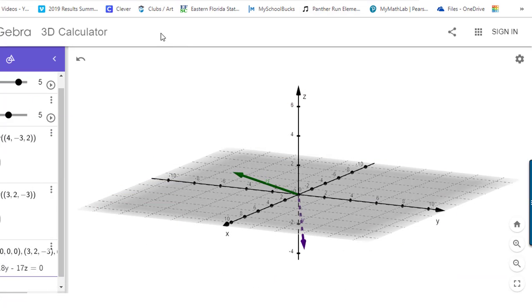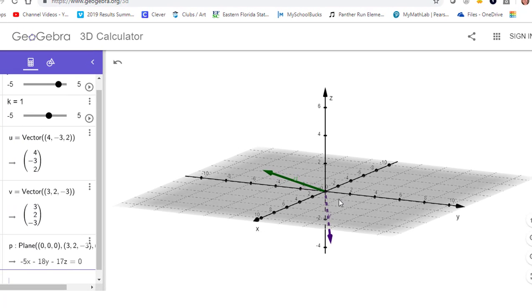This is on the GeoGebra 3D calculator online, and you can see I have put the two vectors, 4, negative 3, 2, and 3, 2, negative 3, into the XYZ coordinate system.